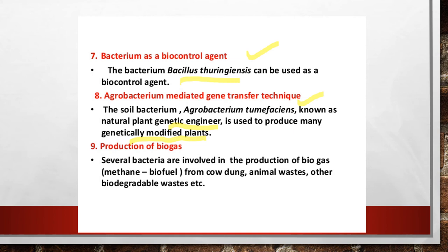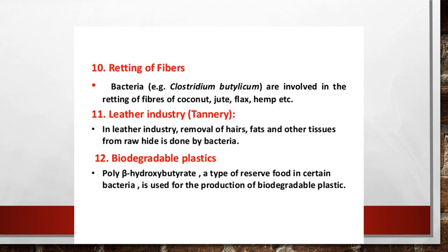Several bacteria are involved in the production of biogas, especially methane used as a biofuel, involving substrates like cow dung, animal waste, and other biodegradable waste. Retting of fibers involves the separation of fibers from the main stem of the plant using certain bacteria like Clostridium butylicum. The bacteria eats up the pectin of the cell wall, resulting in durable and stable fibers separated from the stem.